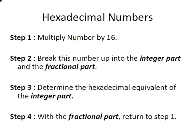Here's the steps we're going to take. First off we're going to multiply our number by 16. Then we're going to break this up into the integer part and the fractional part. We're going to determine the hexadecimal equivalent of the integer part and with the fractional part we're going to return to step one.